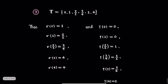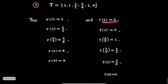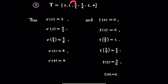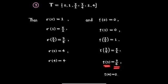On the other hand, rho(0) = 0, rho(1) = 0, rho(3/2) = 1, rho(7/4) = 3/2, rho(2) = 7/4, and rho(4) = 2.